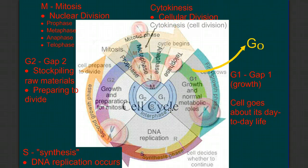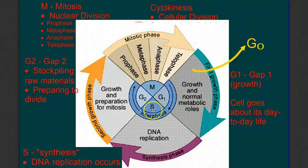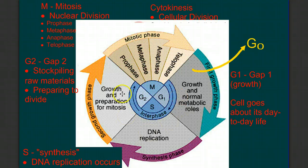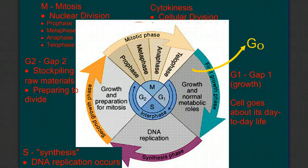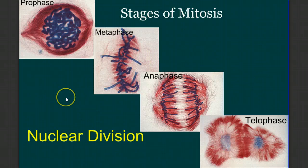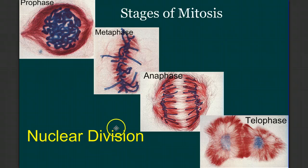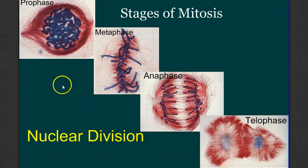Now if we look at the cell cycle in a slightly different way, we can see that G1, S, and G2 are actually part of what we call interphase. The prefix inter means between, so interphase is the time in a cell's life between divisions. G1, S, and G2 are the three stages of interphase. And after interphase, we move into mitosis. The stages of mitosis are prophase, metaphase, anaphase, and telophase — the stages of nuclear division. In this video, we're not going to go into the details of that, but in the video that follows this one, you'll see all the details of how this process occurs.